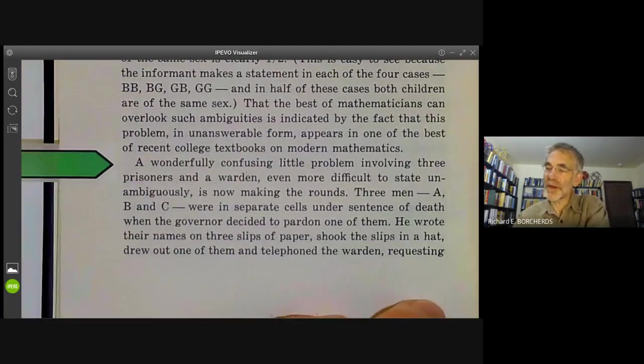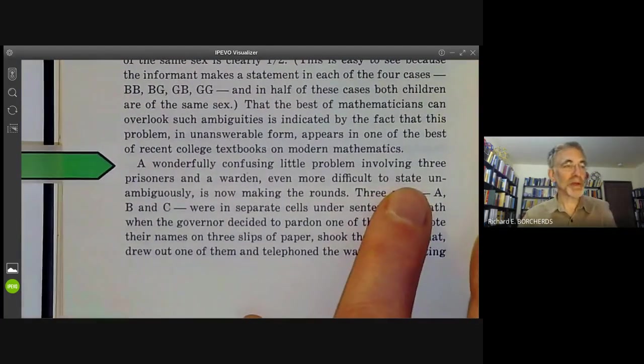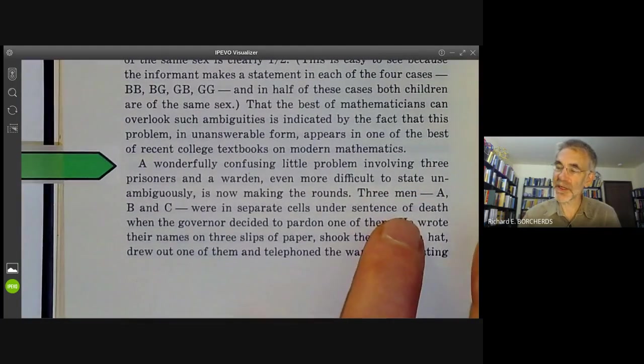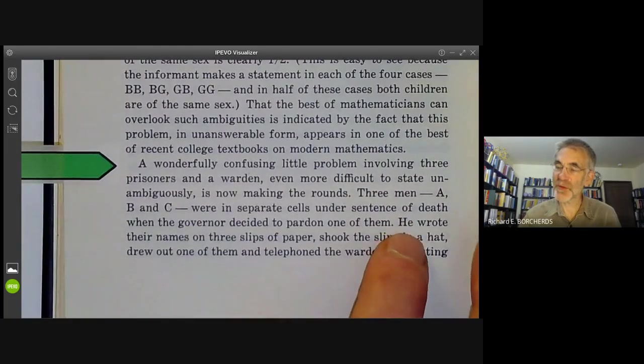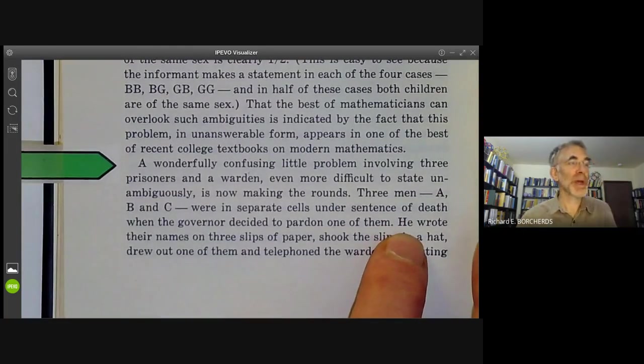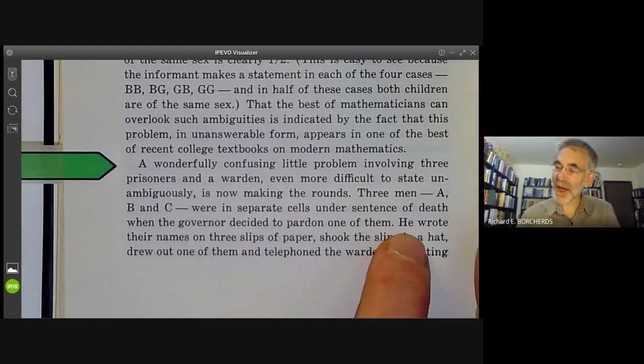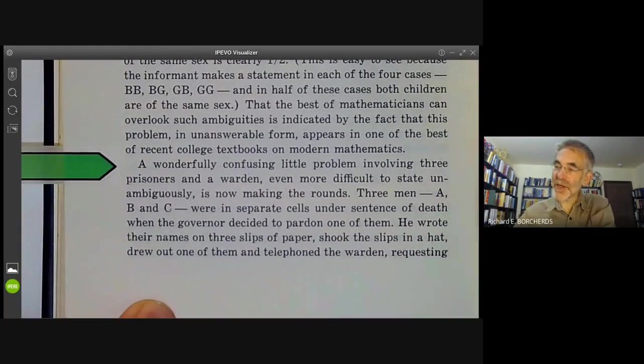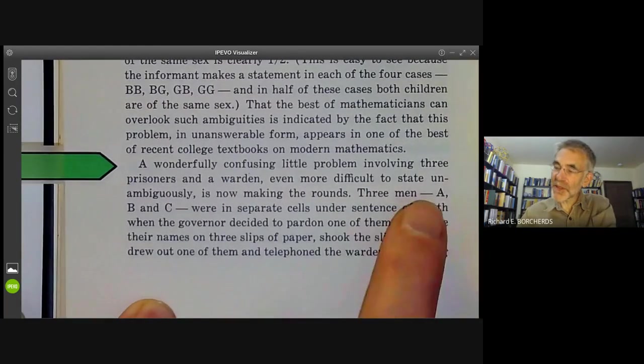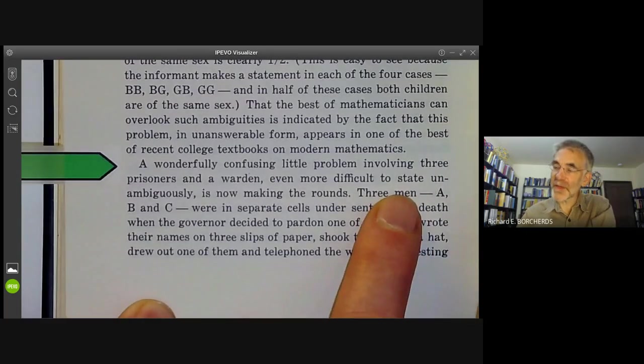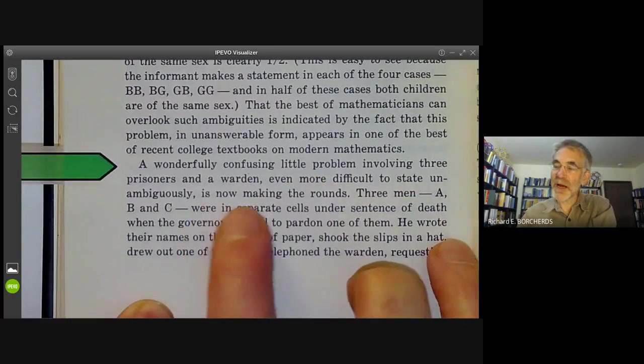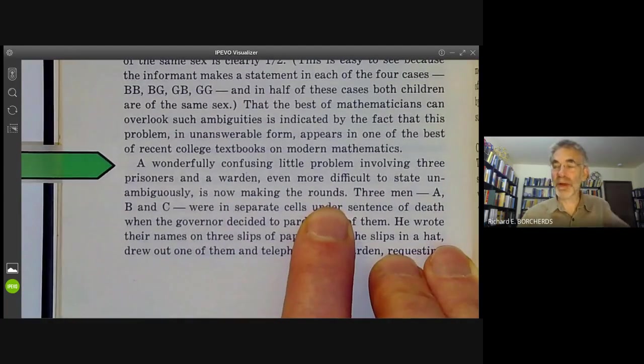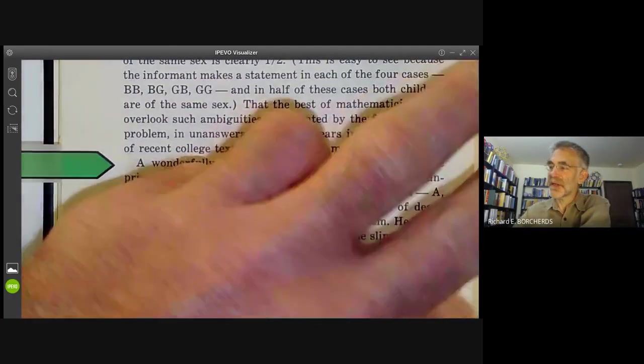So he says here, there's this wonderfully confusing little problem. He's not stating it in terms of goats and cars. He's stating in terms of three prisoners under sentence of death. And one of them was reprieved, only they didn't know which. And you had to calculate what is the chance of being reprieved under some conditions. Incidentally, Martin Gardner probably didn't invent this problem. As you see, he says this little problem is now making the rounds, which suggests the problem was kind of circulating among people at that time. And it's not really clear who first invented it.